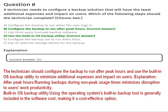Question three: a technician needs to configure a backup solution that will have the least additional expenses and impact on users. Which of the following steps should the technician complete? Choose two. Option A: configure the backup to run when the user logs in. Option B: configure the backup to run after peak hours. Option C: use third-party licensed backup software. Option D: use the built-in OS backup utility. Option E: configure the backup job to run every hour. Option F: use an external storage device. The correct answer is B and D.